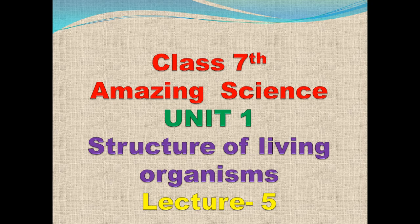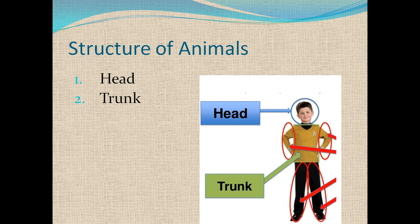Bismillahirrahmanirrahim. Structure of living organisms, Unit number one, Lecture number five — this is the last lecture of this unit. Structure of animals: animals have two main parts of their body, head and trunk. Head is the anterior part of the body.